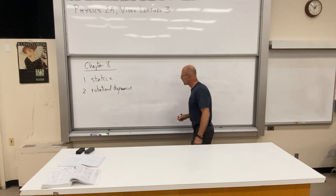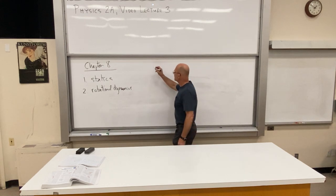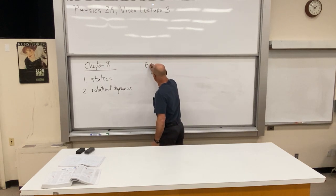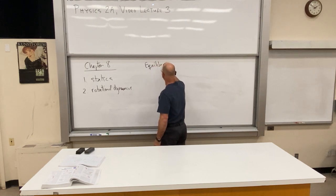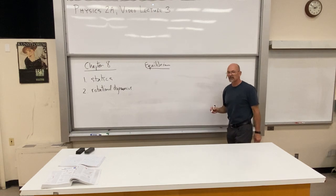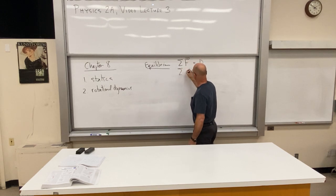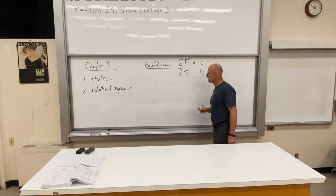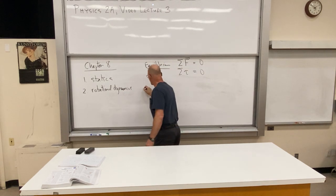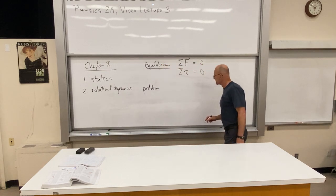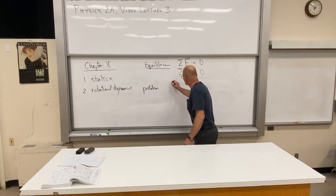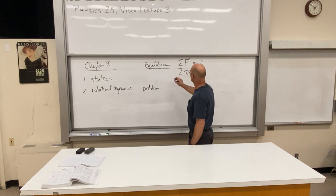So what's the static problem? We have the equilibrium conditions, and the equilibrium conditions are that the sum of forces equals zero and the sum of torques equals zero. The problem we had was with the ice cream sign, so let's go ahead and investigate this. I'll have a nice sketch here.